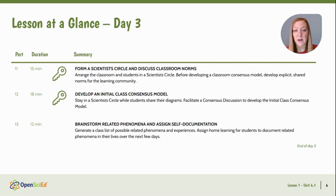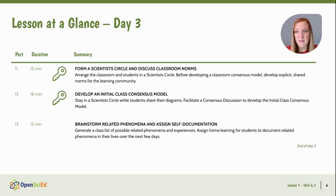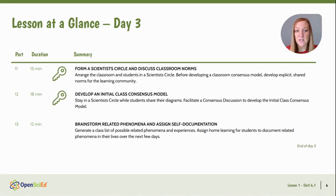On day three, we are going to meet in a scientist circle, which is a routine that we will practice throughout the unit, and we're going to develop some classroom norms. Once that's finished, we're going to develop an initial class consensus model using those diagrams from day two. And then we're going to start brainstorming related phenomena — when have we seen something like this phenomenon in our own lives? — and we'll introduce this idea of a self-documentation collection.